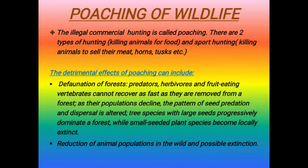Next, poaching of wildlife. In simple words, illegal commercial hunting is known as poaching. There are two types of hunting: killing animals for food, and poach hunting — killing animals to sell their meat, horns, tusks, etc. The detrimental effects of poaching include defaunation of forests; predators, herbivores, and fruit-eating vertebrates cannot recover as fast as they are removed from a forest.